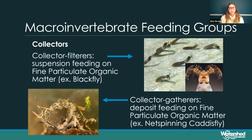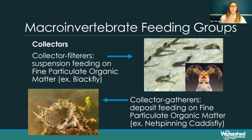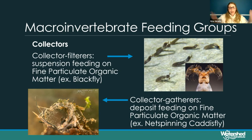We also have collector-gatherers — a different way to collect fine particulate organic matter. A net-spinning caddisfly builds a net using underwater glue rather than a hard case around its body. All caddisflies share this adaptation, but instead of a case, the net-spinner builds a wider net so fine particulates can flow into it. It hangs back in its net just waiting for the food to come to it.